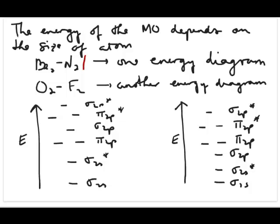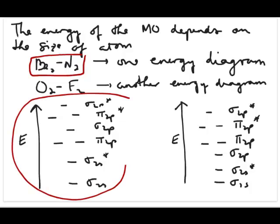So it turns out that if you are making calculations from Be to N2 in the second period elements, you'll find that the energy diagram of the molecular orbital would look like this. So it would start with the sigma 2s, followed by sigma 2s star, and then pi 2p, and then sigma 2p, and then pi 2p star, and sigma 2p star.